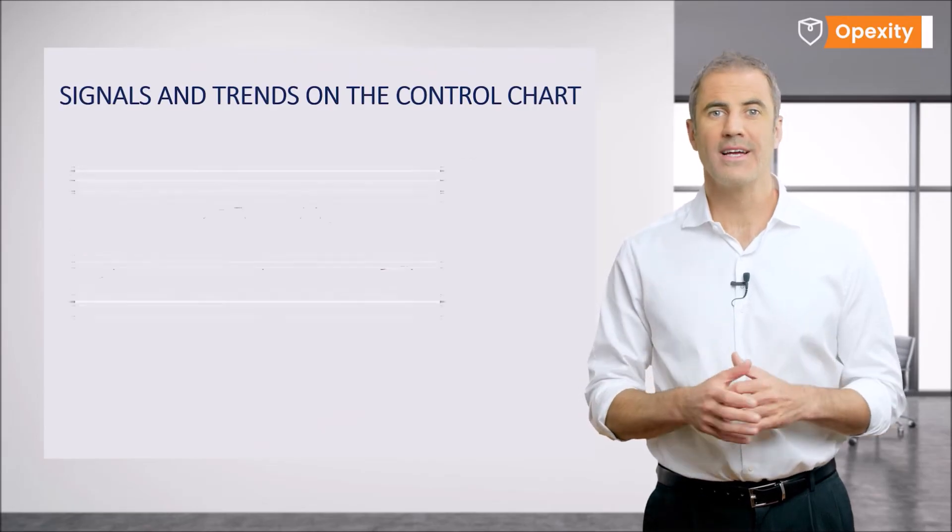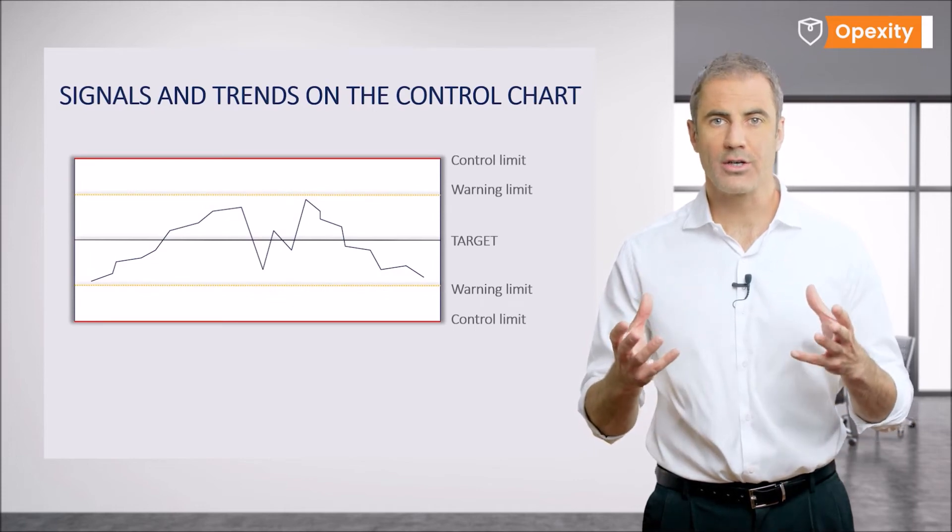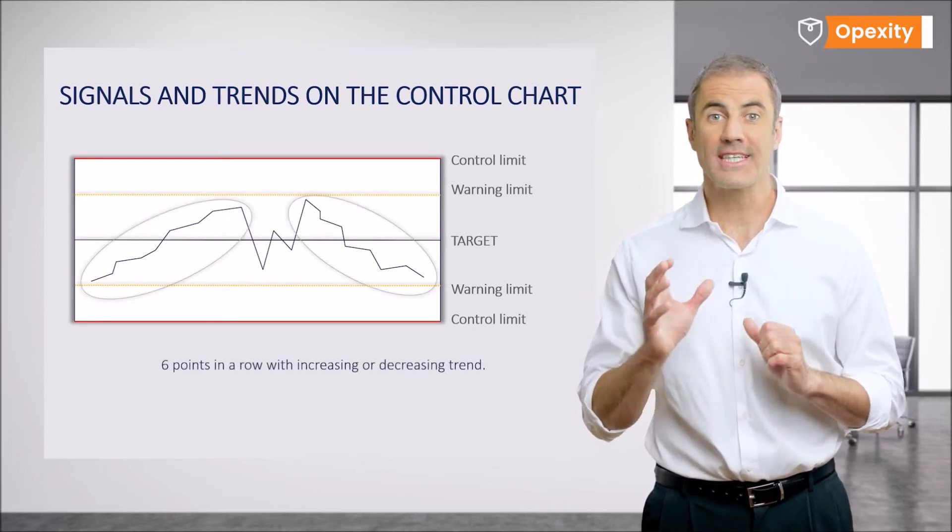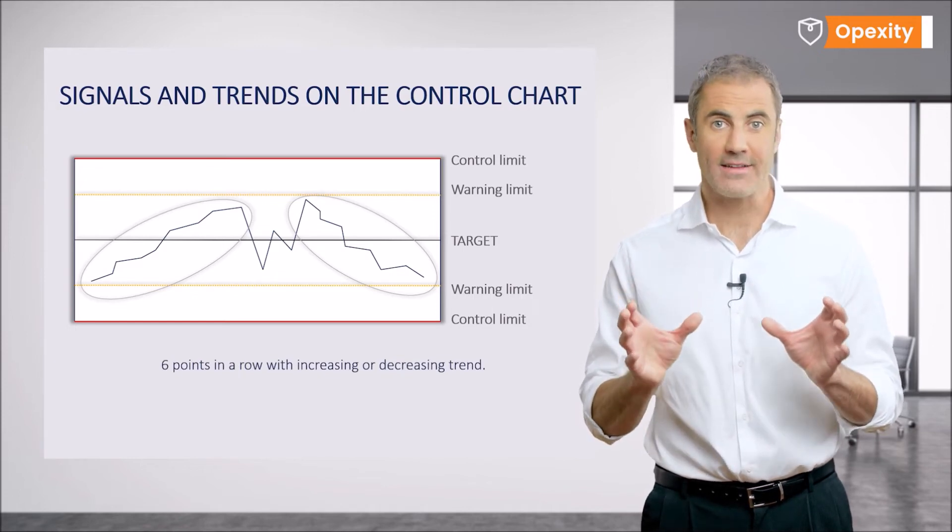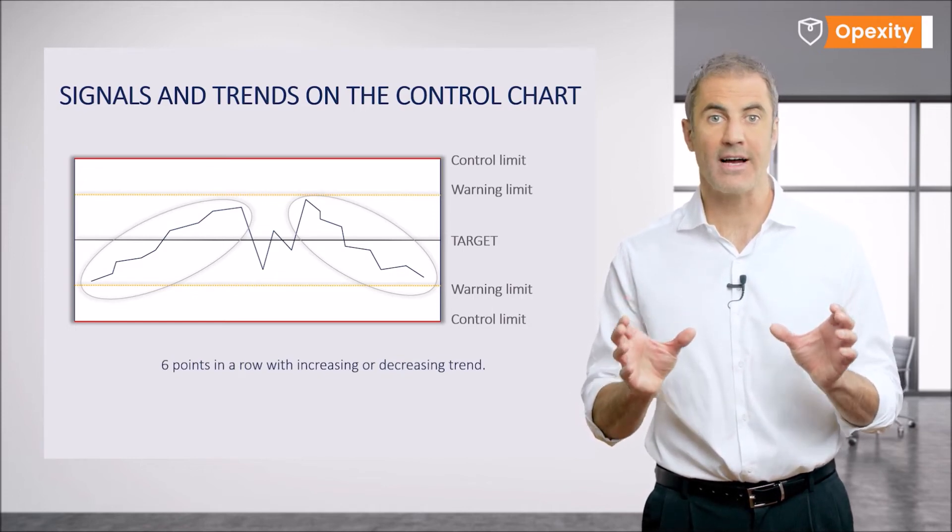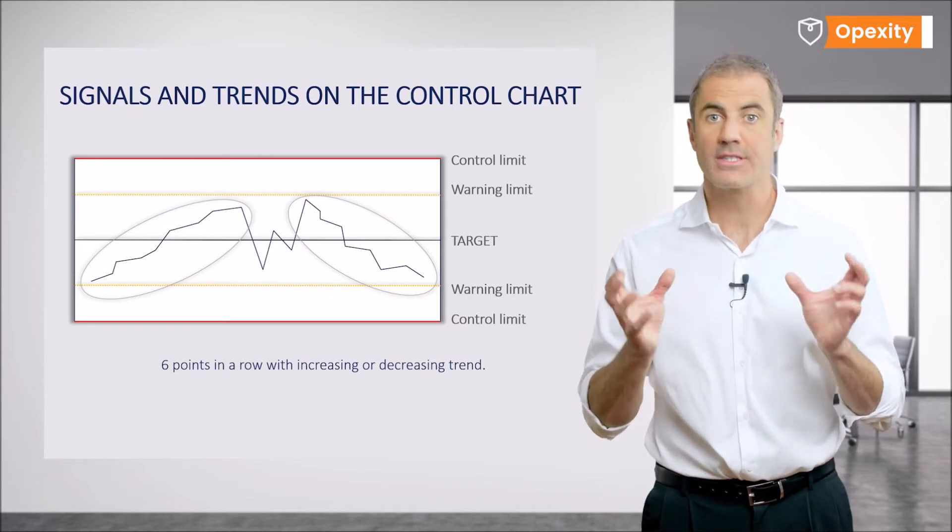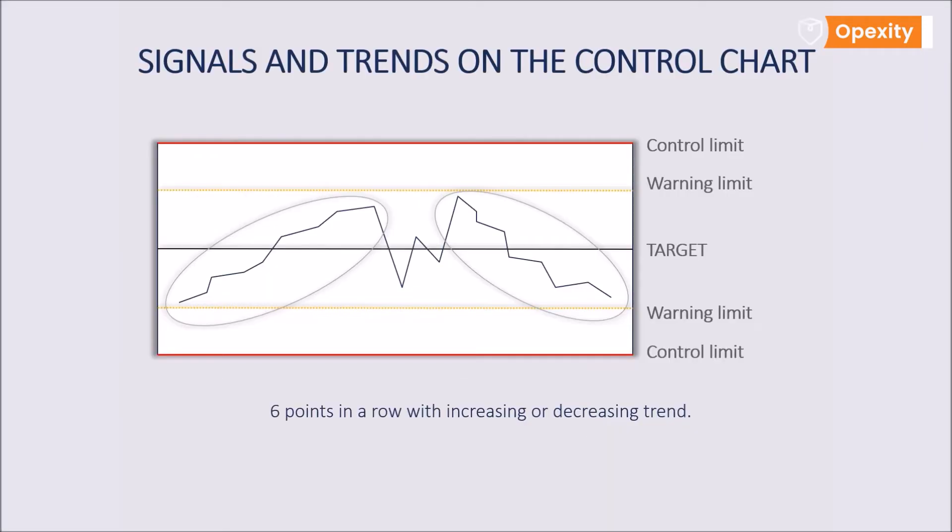Another example is the occurrence of a continuously increasing or decreasing trend. Indeed, just six points in a row can indicate that there is a shift in the process mean value away from the target value and there may be a permanent disturbance causing this effect. We should therefore interrupt the process and this trend. In most cases this effect is due to wear and tear on machinery, inadequate maintenance or even improper handling by production staff.